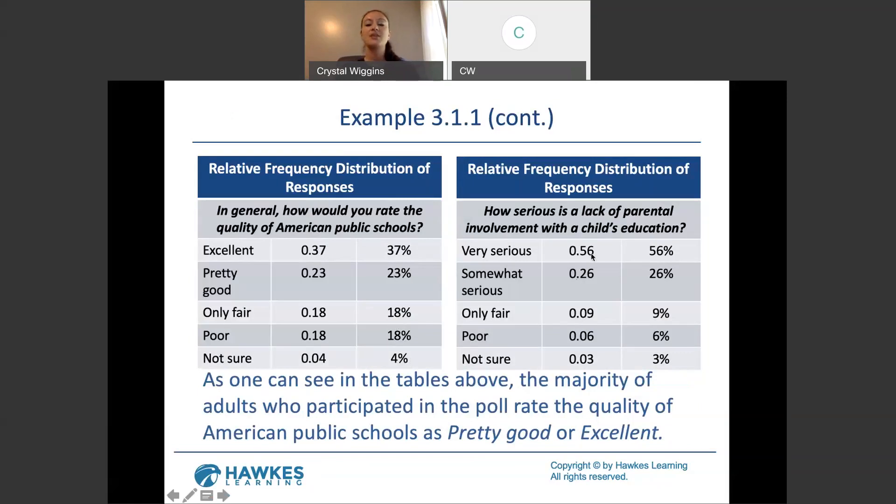Okay. We come over here to the second question and remember there was 700, count of 700 responses for very serious. 700 divided by 1250 and we get the relative frequency 0.56. We move that decimal place two places to the right to get the percentage, which is typically how we would speak when we are referring to something.